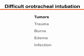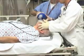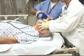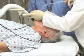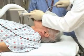The presence of tumors, trauma, burns, edema, or infection of the pharyngeal or laryngeal soft tissues may distort airway anatomy, leading to difficult orotracheal intubation. When faced with a potentially difficult airway, consulting with an experienced intubator and preparing to use an alternative intubation technique are recommended.